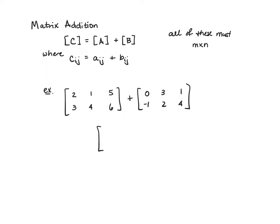And the way we get the answer is we simply are going to look at the first position, two plus zero is two. Down below that, three plus negative one is two.